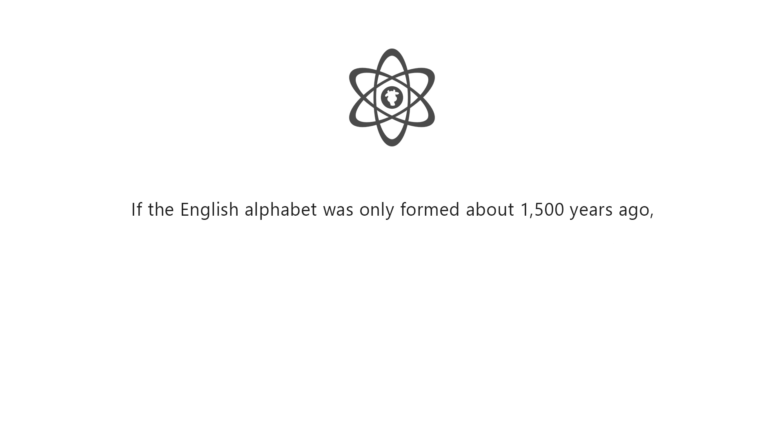If the English alphabet was only formed about 1,500 years ago, how can DNA, which is much older, be made from pairs of letters?